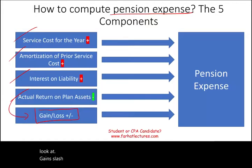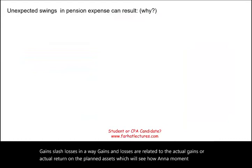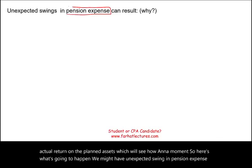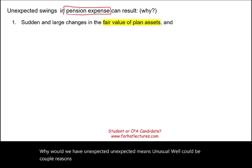Gains and losses are related to the actual return on the plan assets, as we'll see in a moment. We might have unexpected swings in pension expense. Why would we have unexpected swings? Well, there could be a couple of reasons. One is you could have sudden and large changes in the fair value of plan assets.